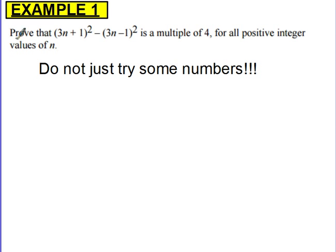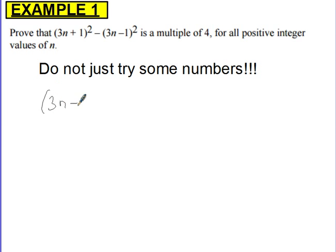Let's go ahead and try this one. Prove that (3n + 1) squared minus (3n minus 1) squared is a multiple of 4 for all positive integer values of n. To do this question, we need to expand and then simplify. So 3n plus 1 squared expands to 9n squared plus 6n plus 1.